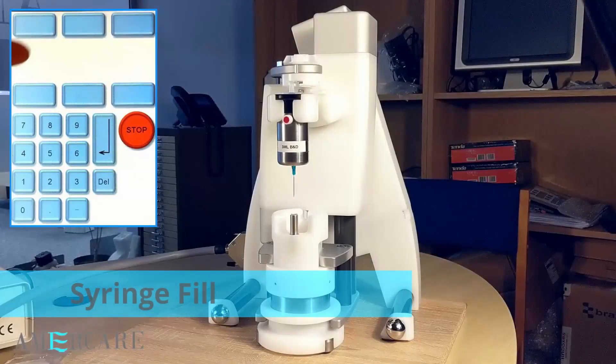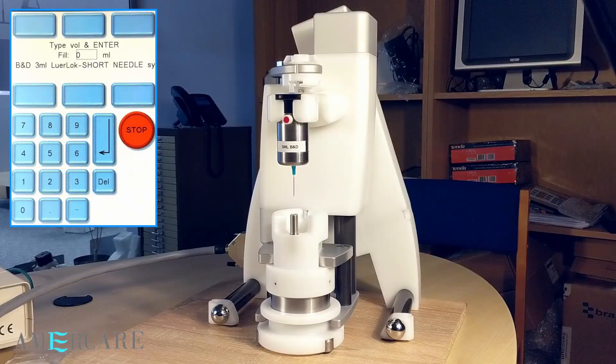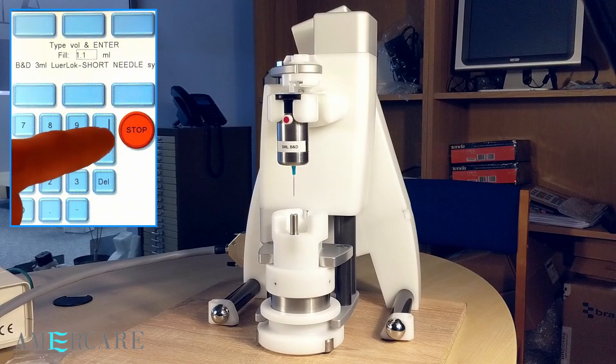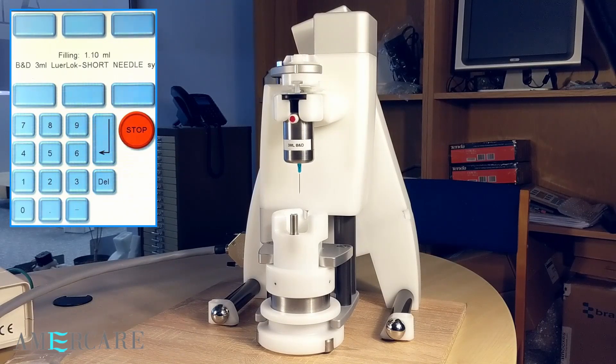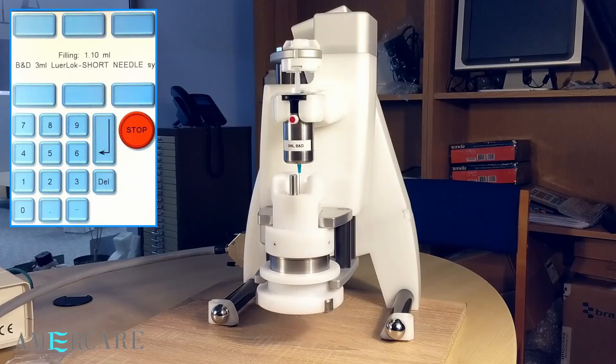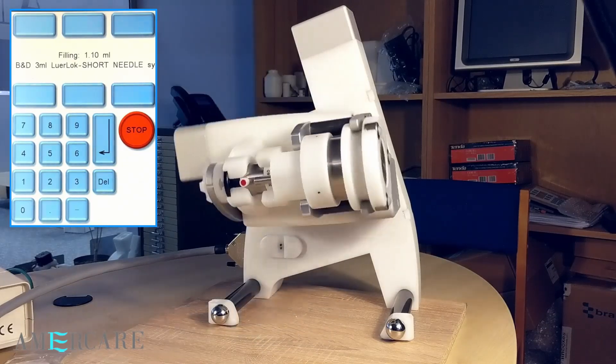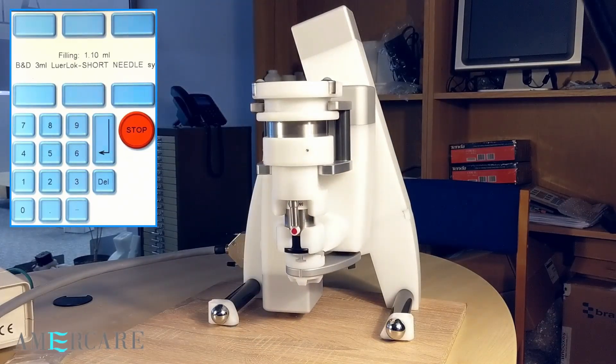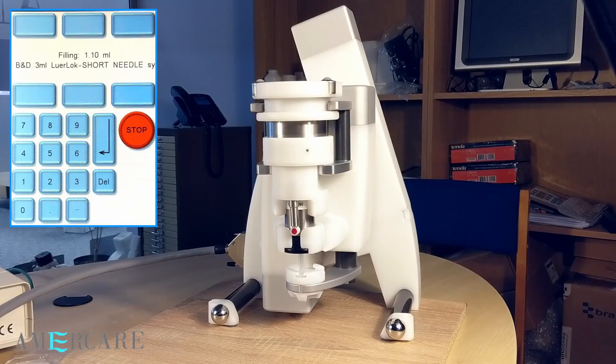To fill the syringe, press fill on the keypad. Input the required value, in this case 1.1 milliliters. Press enter to start the fill. The syringe will move in. The plunger draws up air equal to the fill volume and the carriage begins to lift. The head inverts and the air is injected into the vial. This is to keep the pressure in the vial at the end of the fill equal.